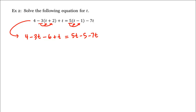Now let's combine like terms on both sides of the equation. The 4 and the negative 6 are like terms, as are the negative 3t and t, and so are 5t and negative 7t. Combining these gives us that 4 minus 6 is negative 2, and then negative 3t plus t is negative 2t, is equal to 5t minus 7t which is negative 2t, and then minus 5.